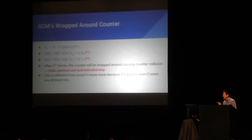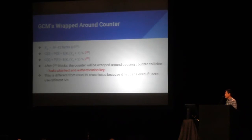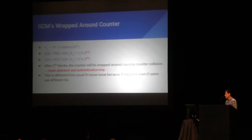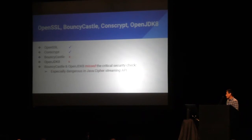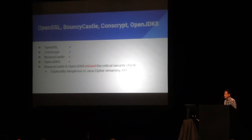Another problem: as I said before, the counter mode works modulo 2 to the 32. So after 2 to the 32 blocks, the counter wraps around, causing counter collisions. In counter mode, counter collisions leak the authentication key. This issue is different from the IV reuse issue because it happens even if users use different IVs. I checked OpenSSL, BoringSSL, Bouncy Castle, and OpenJDK — and all missed this critical check. It's especially dangerous in Java Cipher because it uses a streaming API, meaning you can encrypt a large file by calling encrypt on each chunk.